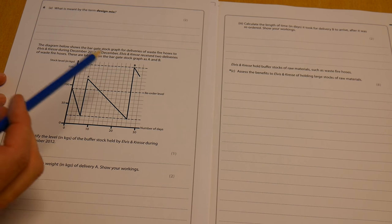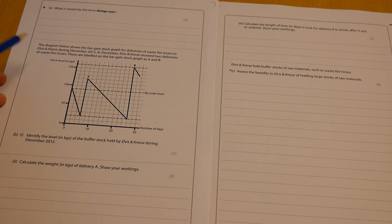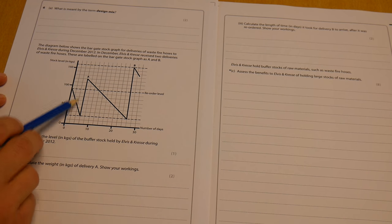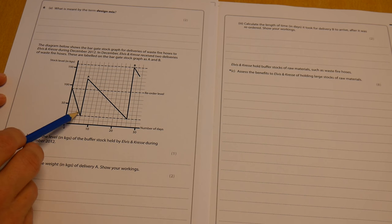In December, Elvis and Kress received two deliveries of waste fire hoses. This is a business that makes wallets and bags out of used fire hoses. These are labeled on the bar gate stock graph as A and B. So we can see those deliveries and therefore there is this big jump in the stock level.